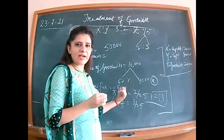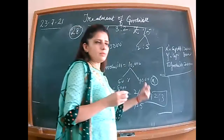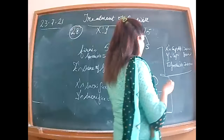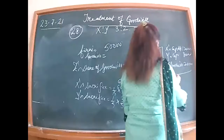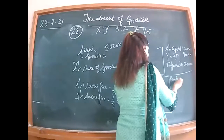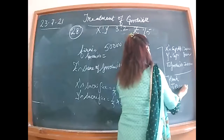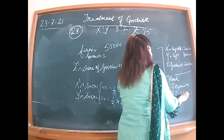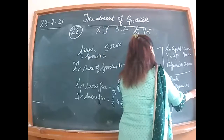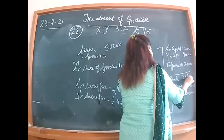Z brings 6,000 in cash out of 10,000 share of goodwill. Bank account debited to Premium for Goodwill and to Z's capital. Total: 2 lakh capital plus 6,000 premium for goodwill.